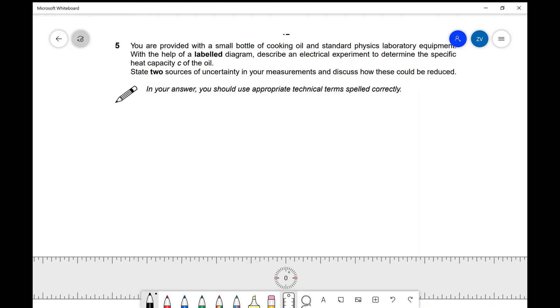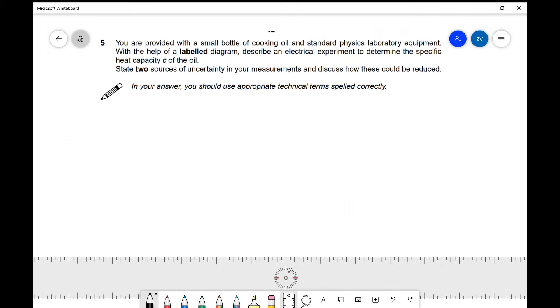Today we're determining the specific heat capacity of a substance. I've decided to illustrate this with a past paper question from 2014. It's a six marker past paper question. Let's read through the question: you're provided with a small bottle of cooking oil and some standard physics lab equipment. With the help of a labeled diagram, we're going to make sure that we both draw a diagram and also label it.